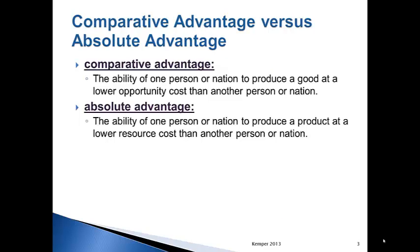Opportunity cost tells us a lot about how people and nations should specialize and what they should trade for. Comparative advantage is the ability of one person or nation to produce a good at a lower opportunity cost than the other nation or person. Absolute advantage, which you are probably more familiar with, is the ability of one person or nation to produce a product at a lower resource cost than the other person or nation.